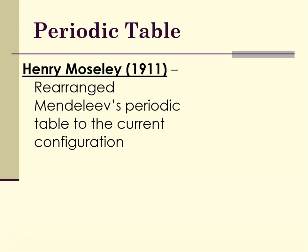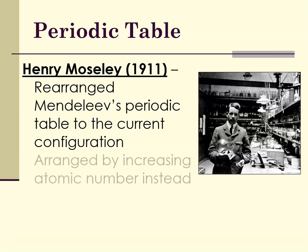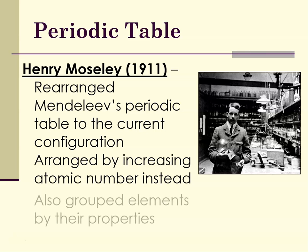Not much changed on the Periodic Table until 1911, where Henry Moseley, who worked in Rutherford's laboratory, rearranged Mendeleev's Periodic Table to its current configuration — arranged in order of increasing atomic number. He also grouped elements according to their properties.